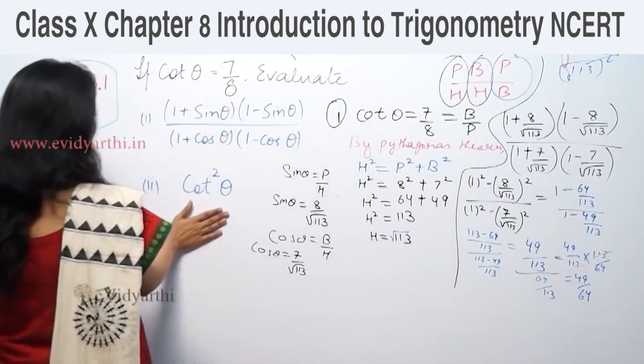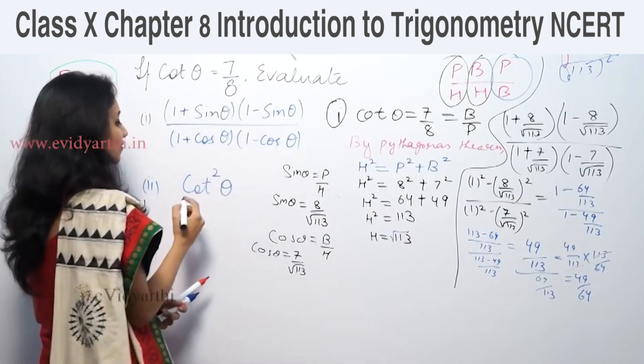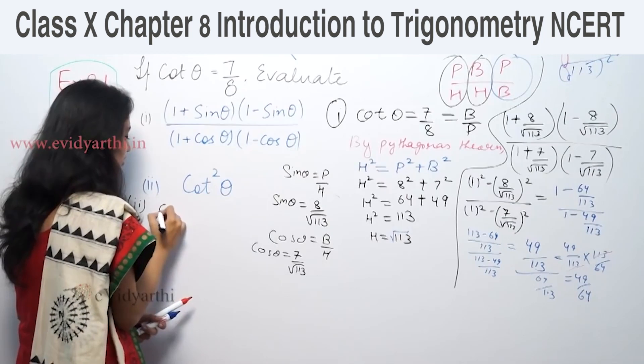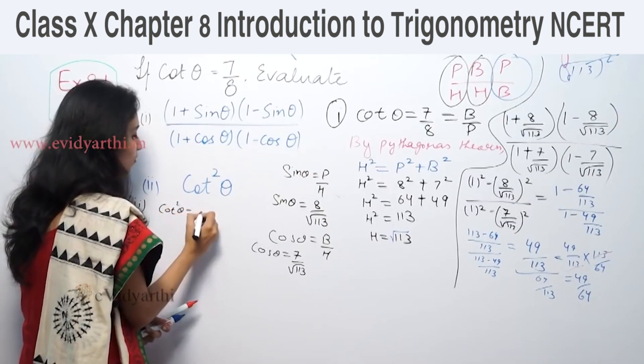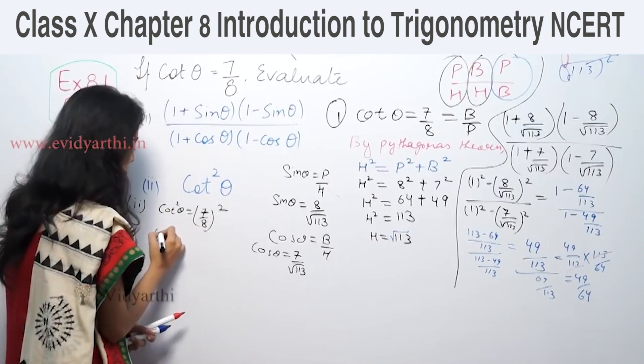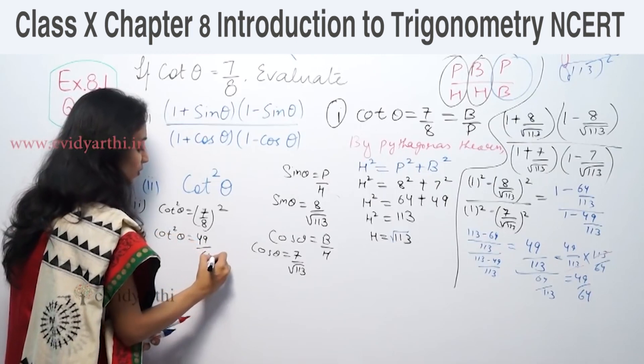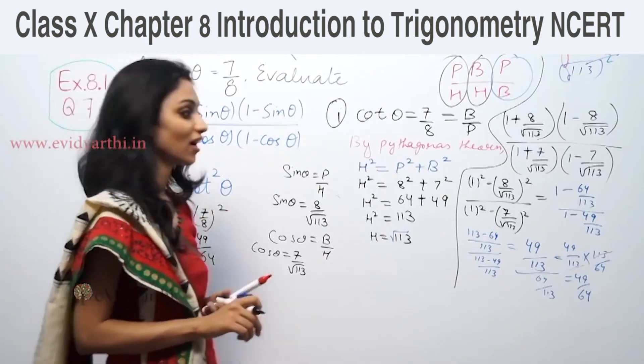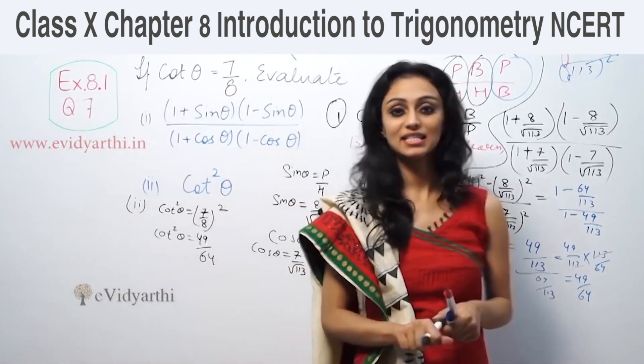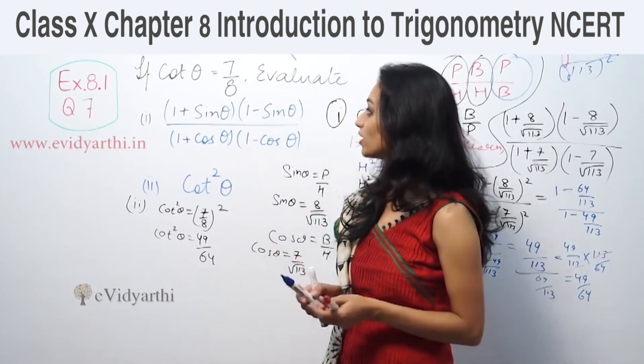Now part number second, cot² θ. We know cot θ equals 7 by 8, so cot² θ equals 7² by 8², which equals 49 upon 64.